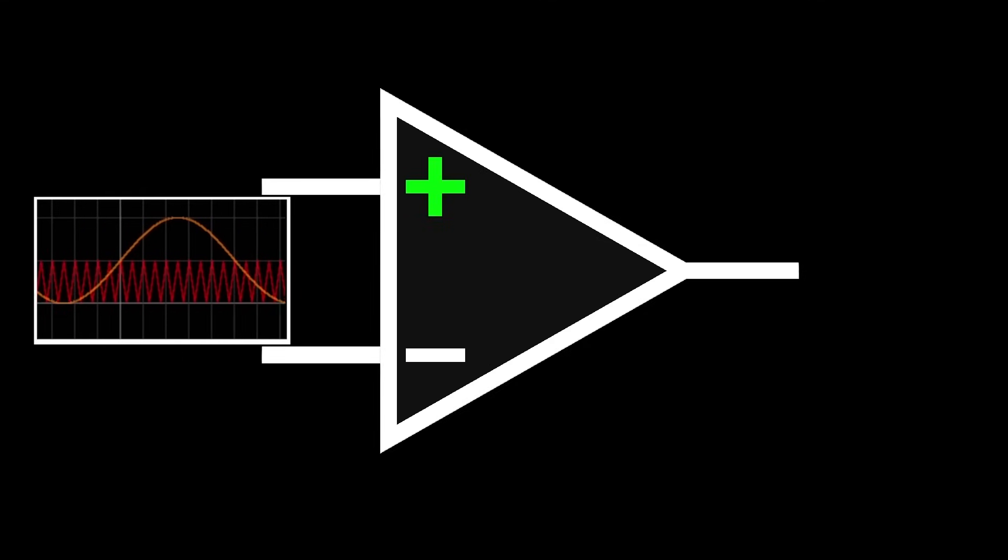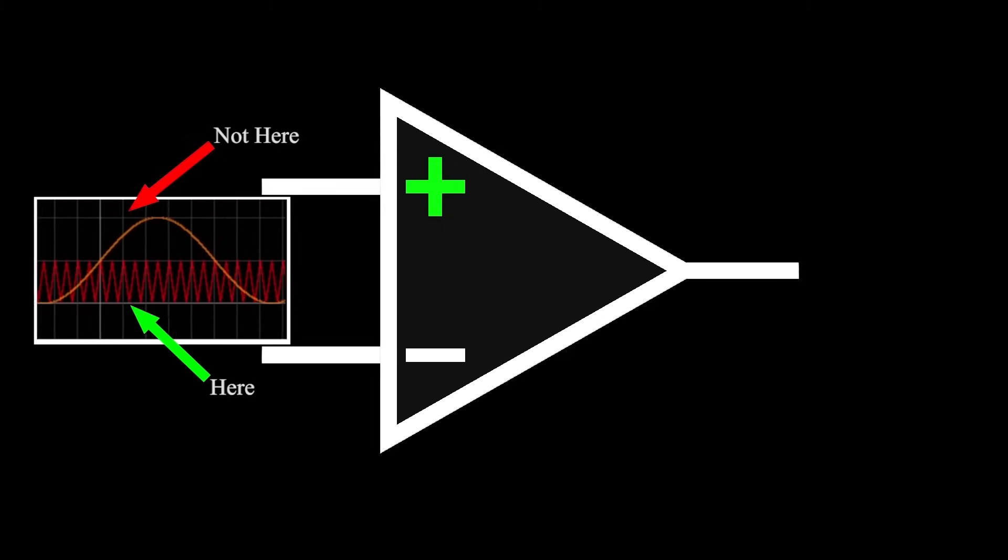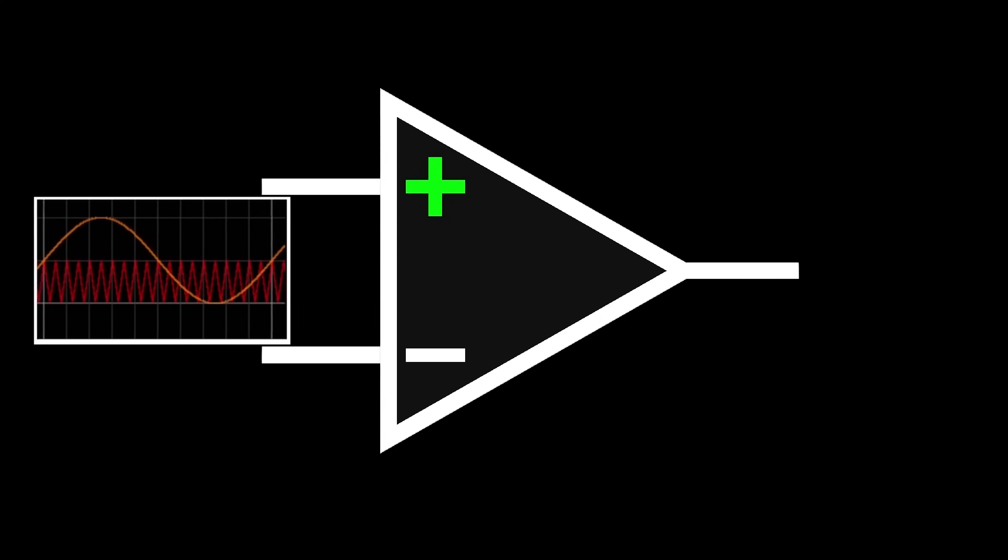And in this comparator, we want the output high when the sine wave is below the triangle wave, and low when it is above. Hence, we invert the inputs.